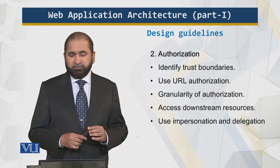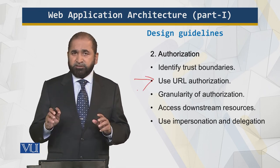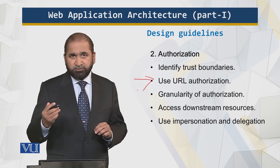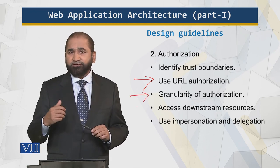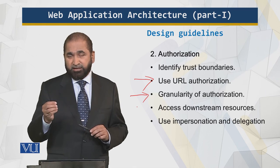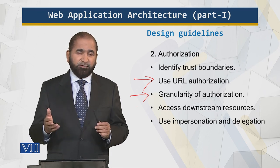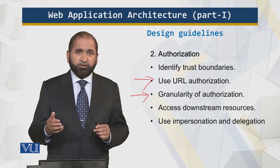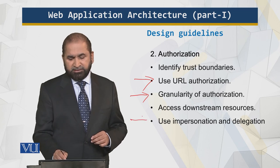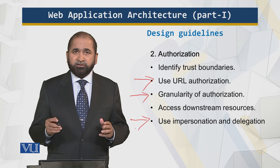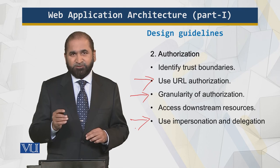For authorization, identify the trust boundaries and use URL authorization so that users cannot change things and gain rights you have not allowed them. Consider the granularity of authorization: very fine-grained detail gives a more secure system but compromises performance, while a high-level approach gives good response but may compromise security. Use impersonation and delegation as appropriate. All of these things will ensure that your web-based database application is secure. More points in the next module.